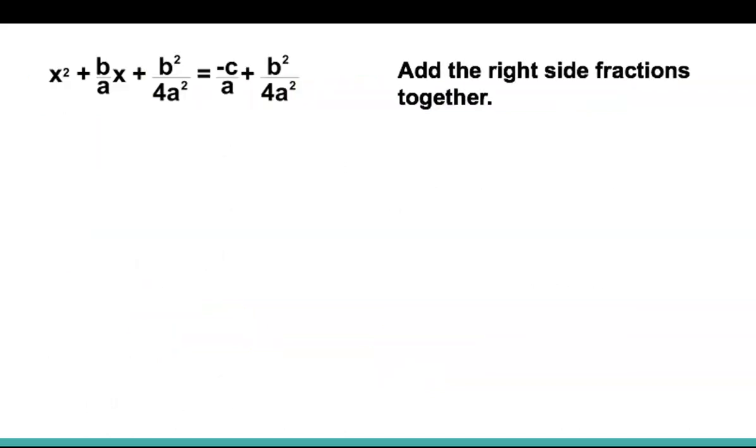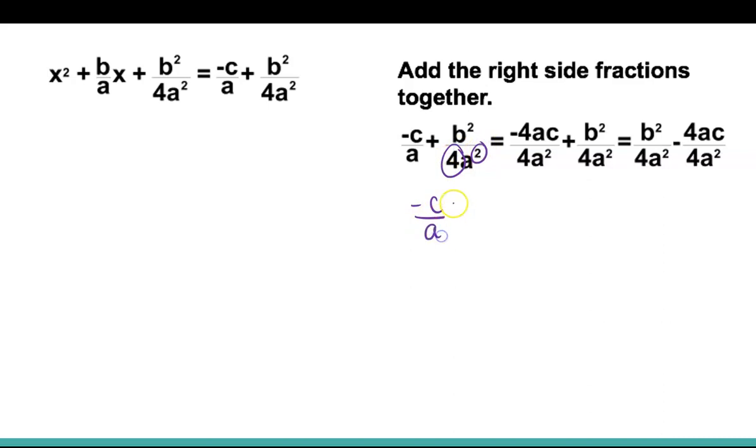Next, we want to simplify the right side. So we needed to make it have a common denominator. The left fraction only has an a. The right fraction has a 4 and an a squared. So we took negative c over a, and we multiplied it by 4a over 4a. That way, we would have negative 4ac all over 4a squared. So that's how they got that right there. This second fraction just remained the same. Then, now that we have a common denominator, we can add across. So negative 4ac plus b squared. They just put it in a different order: b squared minus 4ac.